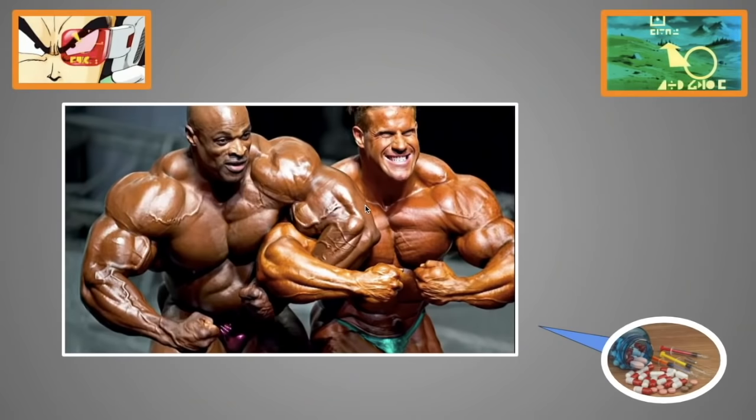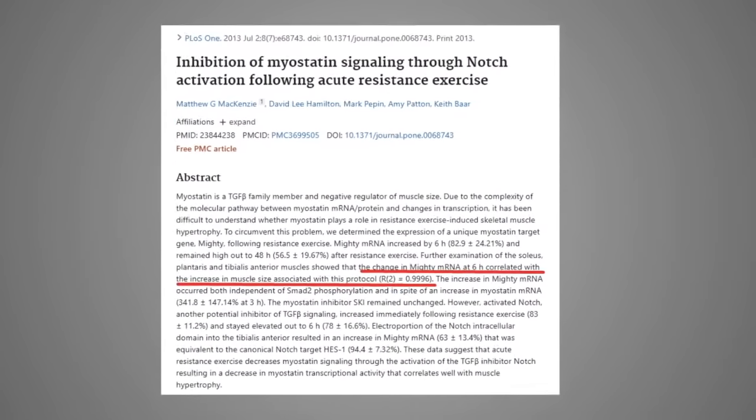And again, the reason why professional bodybuilders look so huge is because one of the main effects of testosterone is to interfere with the myostatin pathway. Mainly by upregulating follistatin or increasing the activity of the IGF-1 pathway.